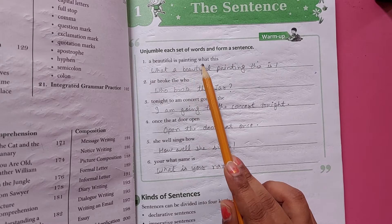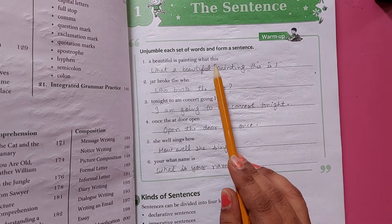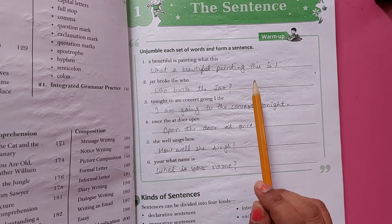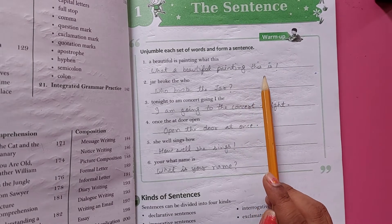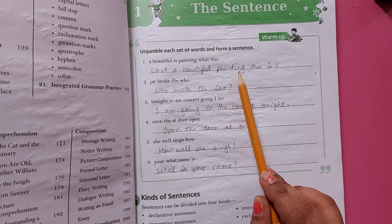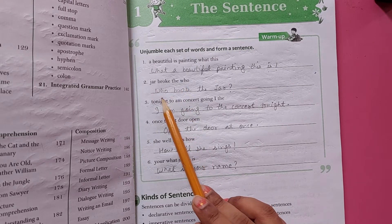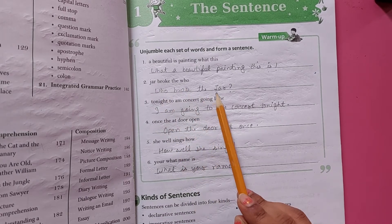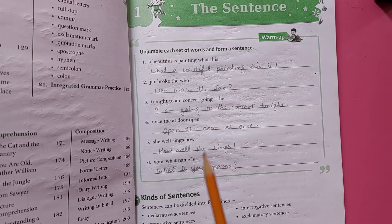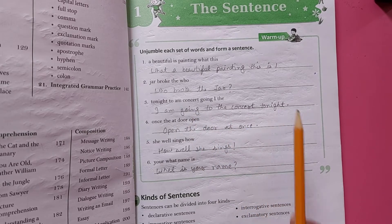First, a beautiful is painting what this. What a beautiful painting this is. Jar broke the jar. Who broke the jar. Tonight, to am concerned going either. I am going to the concert tonight.